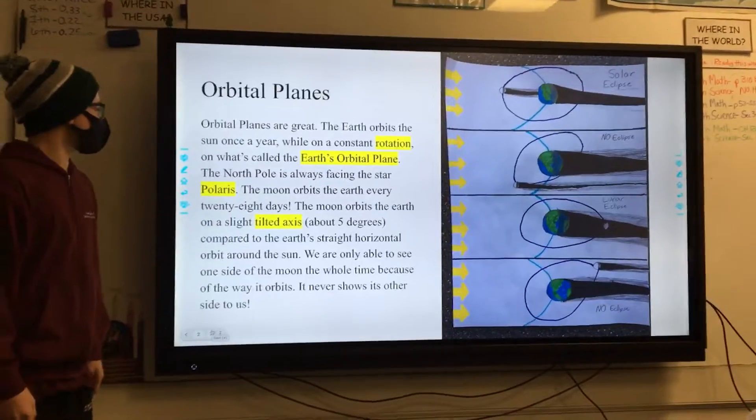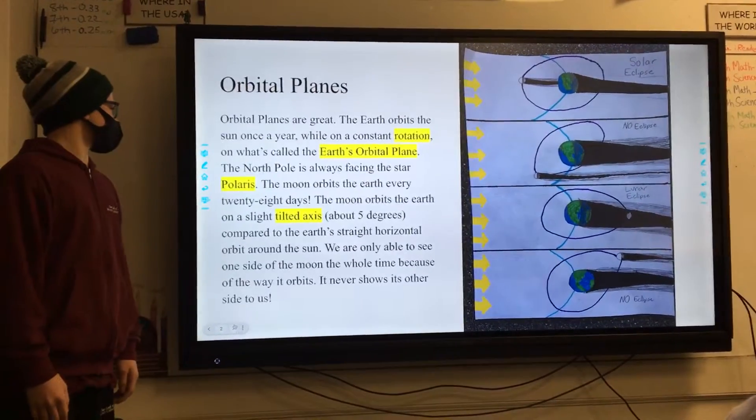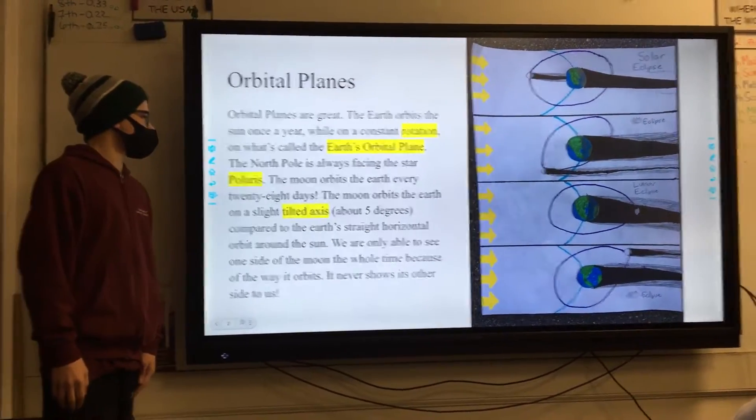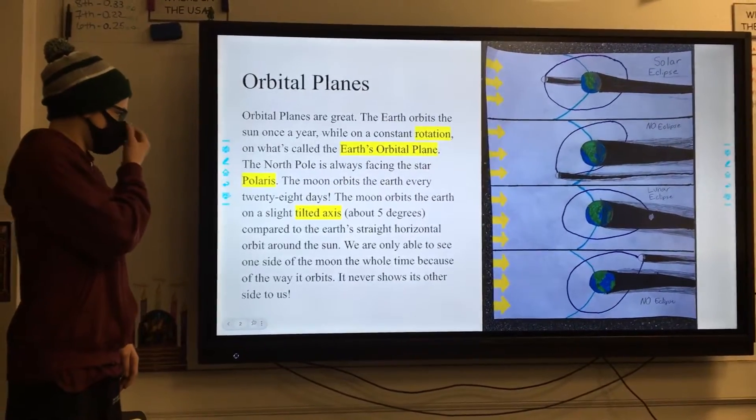Orbital planes. Orbital planes are great. The Earth orbits the Sun once a year while on a constant rotation on what's called the Earth's orbital plane. The North Pole is always facing the North Star Polaris.